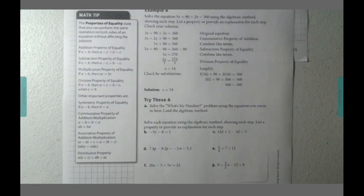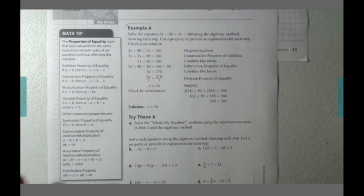So let's take a look at example A. It has been worked for us completely. It asked us to solve the equation 30x plus 90 plus 2x equals 360 using the algebraic method. It also asks that you list the property or provide an explanation for each step that you take, and then it turns around and tells you to check your answer in the end.